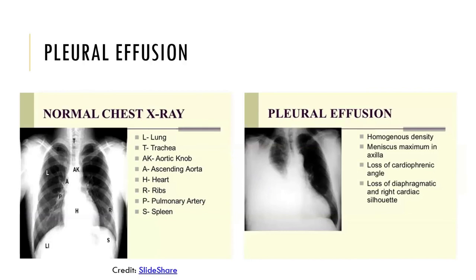Pleural effusion is a buildup of fluid between the tissues that line the lungs and our chest. If there is poor pumping by the heart or increased inflammation, effusion becomes a possibility because more fluid tends to build up in that space.